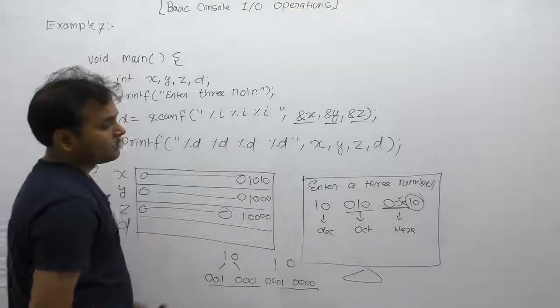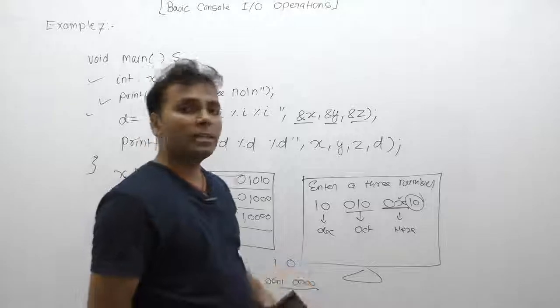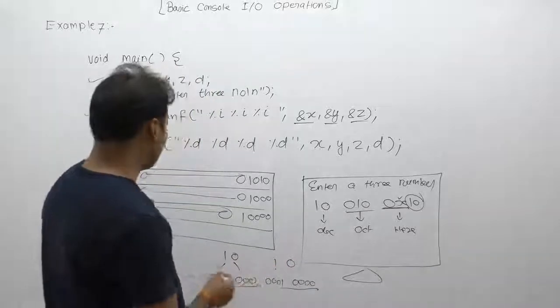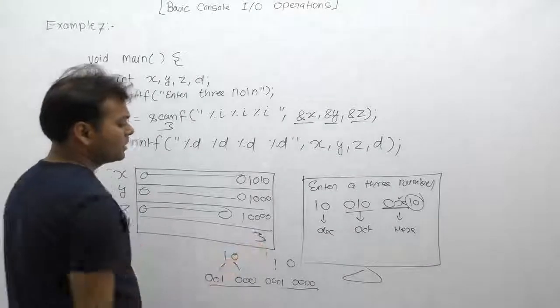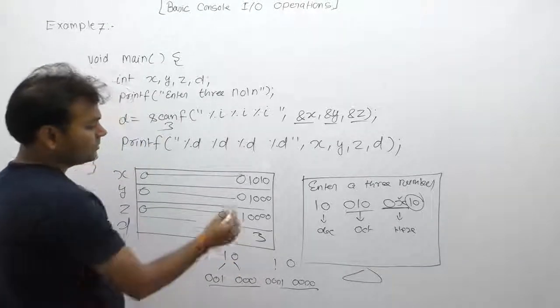In this case, total number of successfully read items returned is three. Therefore value of d is directly initialized as three. There is no need of binary number of d.